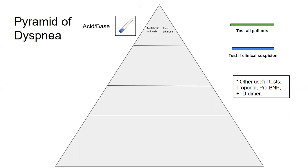If someone's short of breath and you think they're septic, it's kind of like the poor man's lactate — they're acidotic and trying to breathe off CO2 to compensate. So metabolic acidosis and respiratory alkalosis are the key ones.